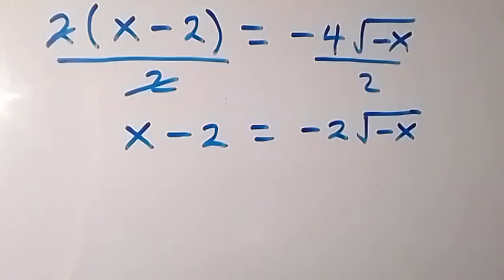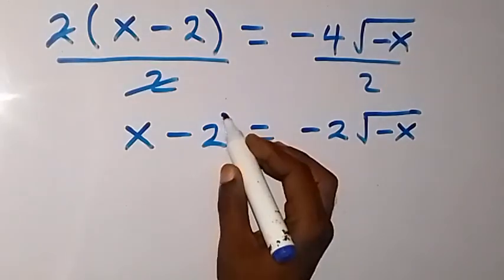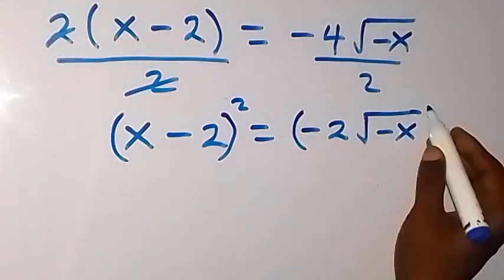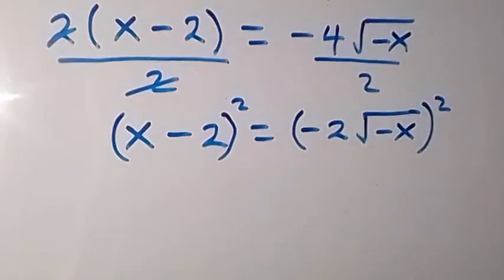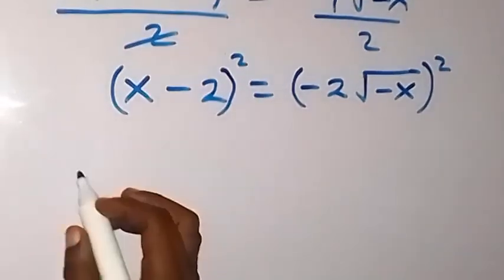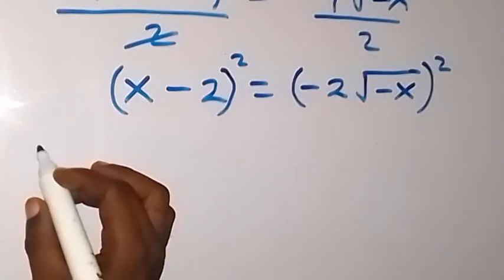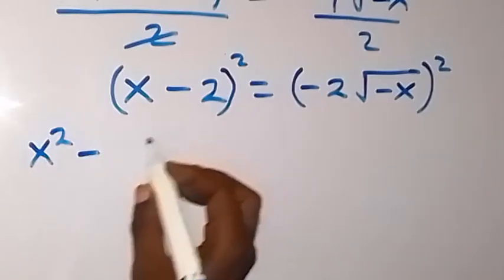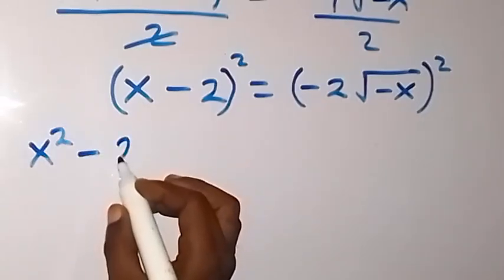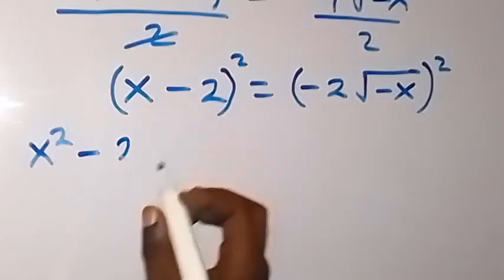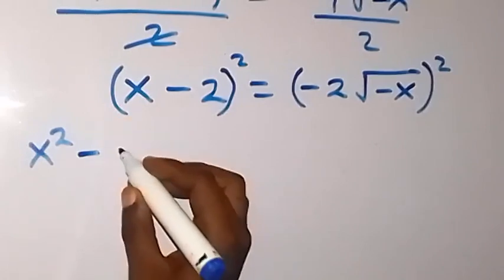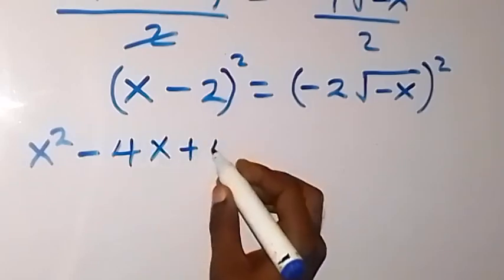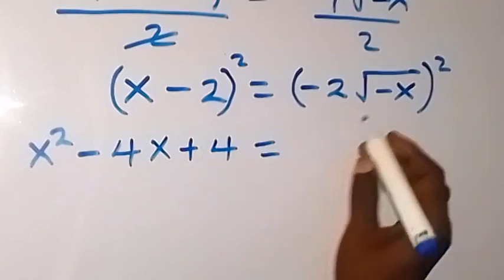From here, let's take the square on both sides again. We square both sides. The left side expands as x squared minus 2 times x times 2, that's minus 4x, then plus 2 squared, which is 4.